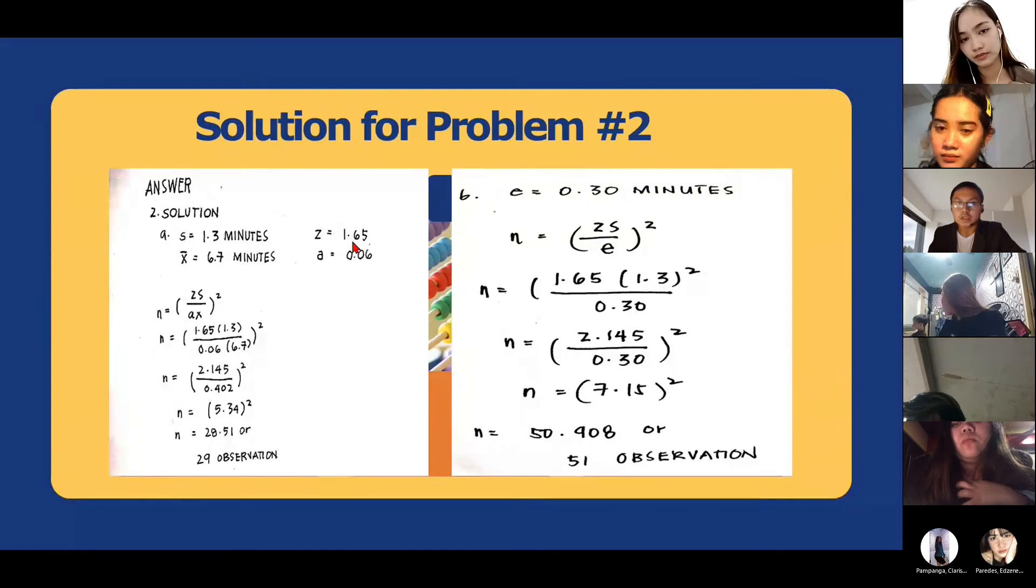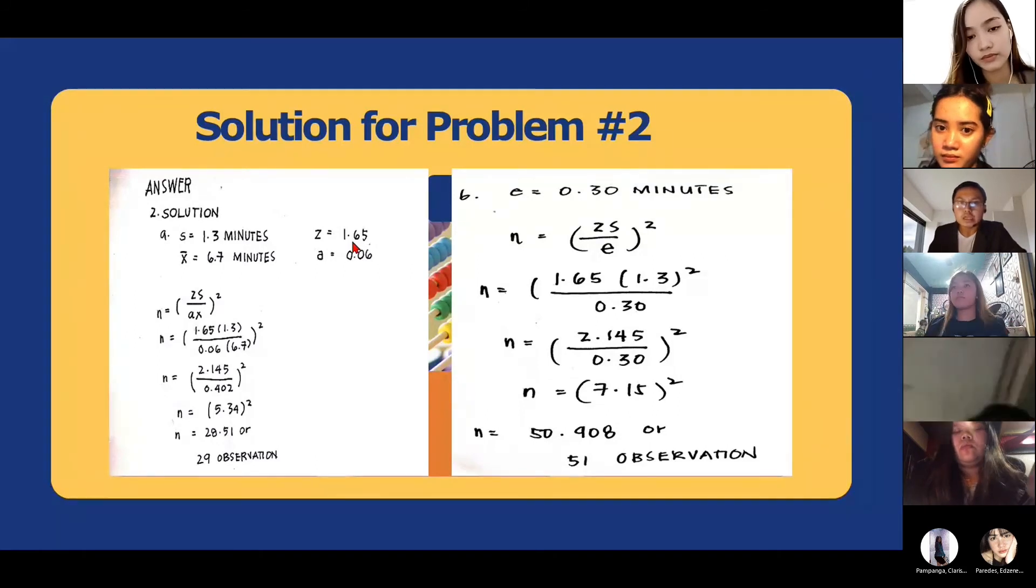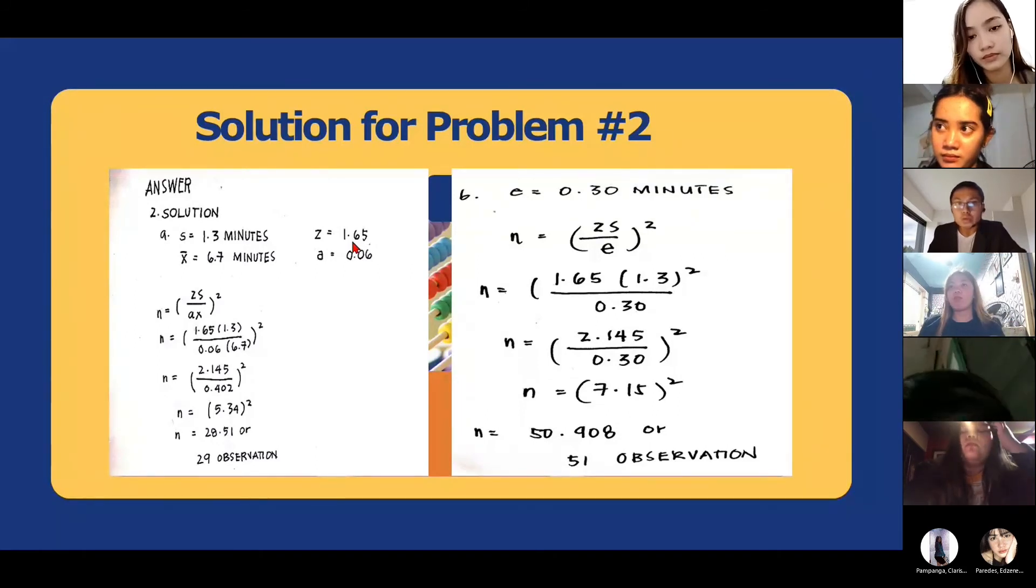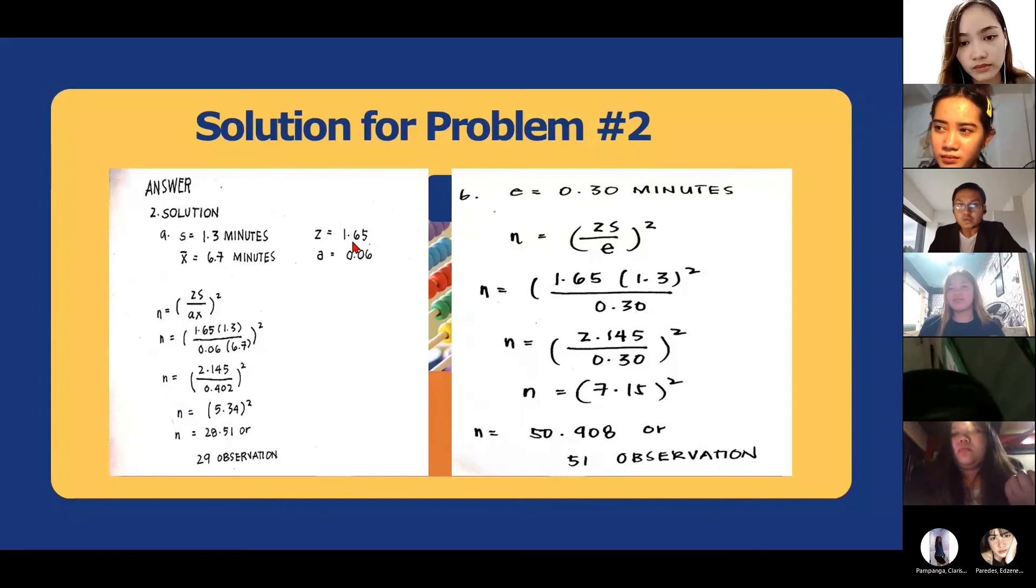The format is Christopher Terrier's letter B. B is equal to 0.30 minutes. Ang formula po na ito is N is Zs over E squared. And 1.65 close parentheses 1.3 squared over 0.30. Z ay 2.145 over 0.30 squared.